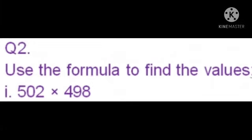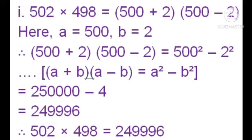Sum number 1: 502 multiplied by 498. First, convert these numbers into addition and subtraction form. Important tip: look at the unit digit. If the unit digit is 5 or less, use addition; if greater than 5, use subtraction. For 502, unit digit is 2 (less than 5), so write it as 500 + 2. For 498, unit digit is 8 (greater than 5), so write it as 500 - 2.